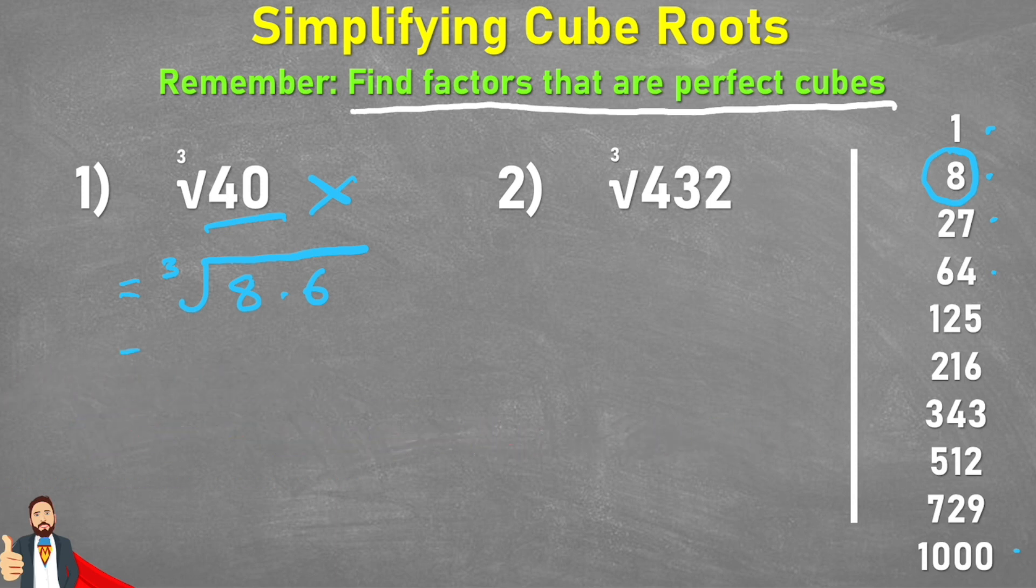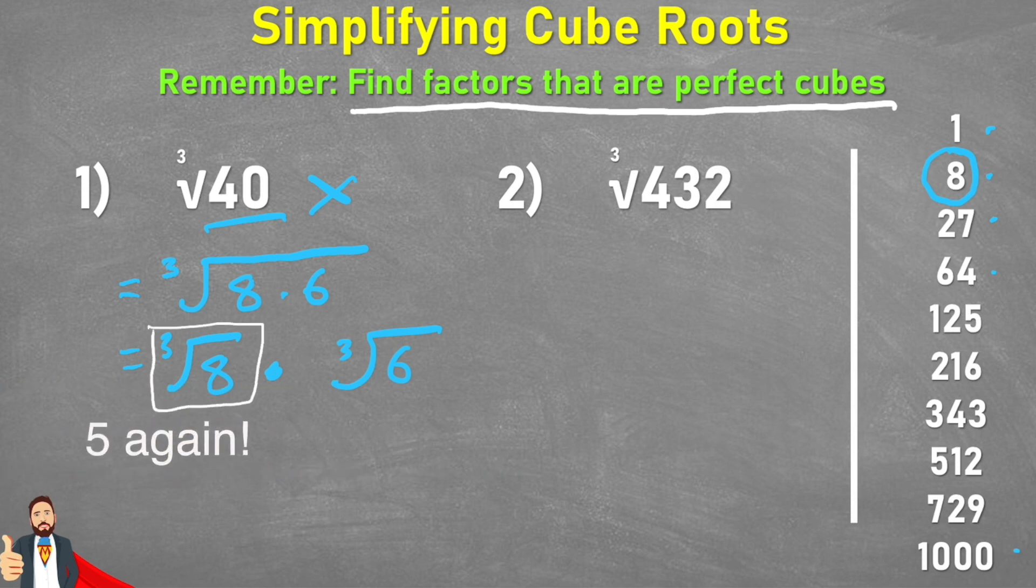we can actually say that it is equal to the cube root of 8 multiplied by the cube root of 6. And now we can begin to simplify because we know what the cube root of 8 is. It's 2. Because 2 times 2 times 2 is 8.